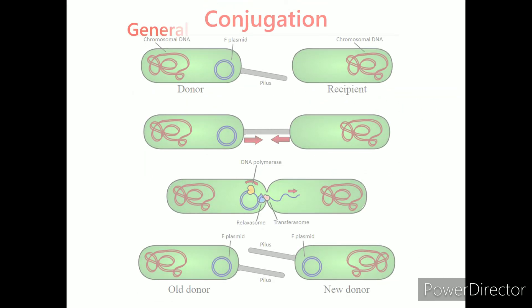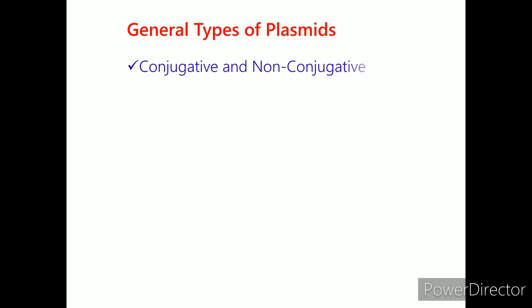Conjugation. General types of plasmids: conjugative and non-conjugative. There are many ways to classify plasmids from general to specific. One way is by grouping them as either conjugative or non-conjugative. Bacteria reproduce by sexual conjugation, which is the transfer of genetic material from one bacterial cell to another, either through direct contact or a bridge between the two cells. Some plasmids contain genes called transfer genes that facilitate the beginning of conjugation. Non-conjugative plasmids cannot start the conjugation process and they can only be transferred through sexual conjugation with the help of conjugative plasmids.